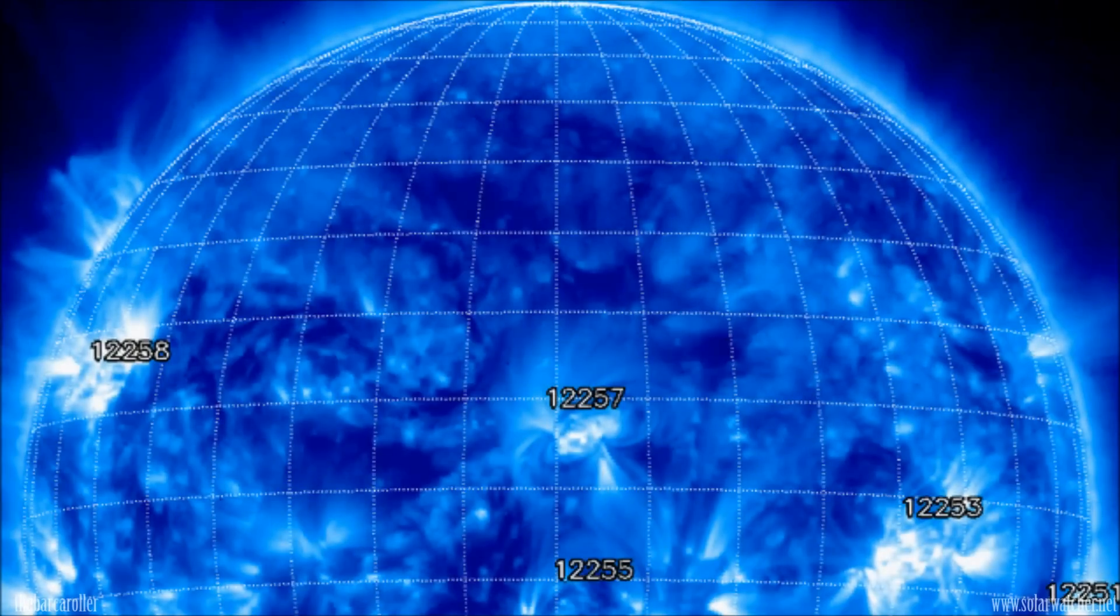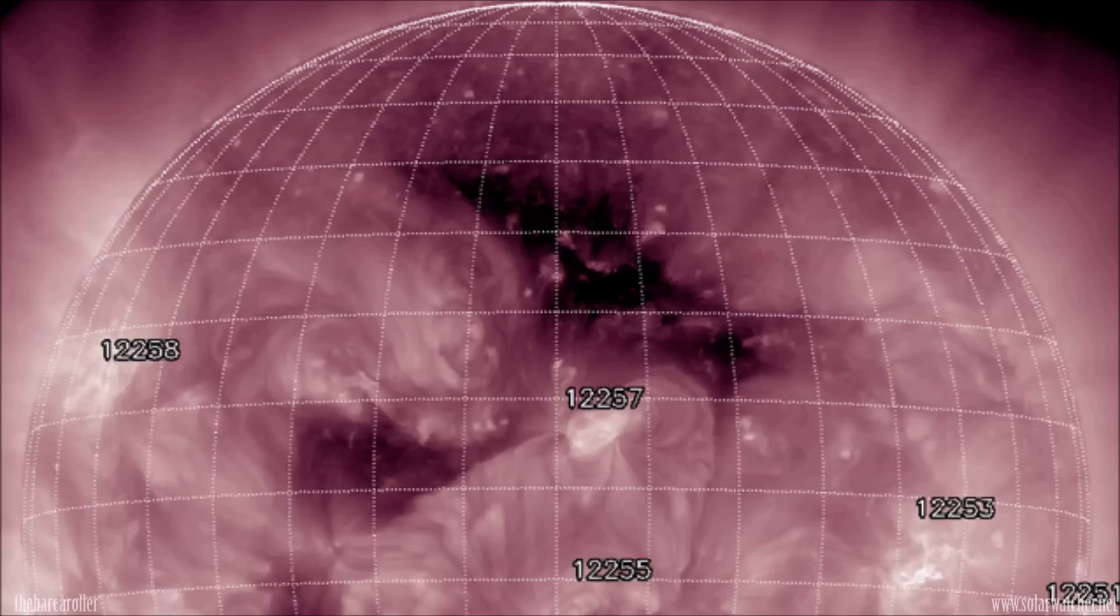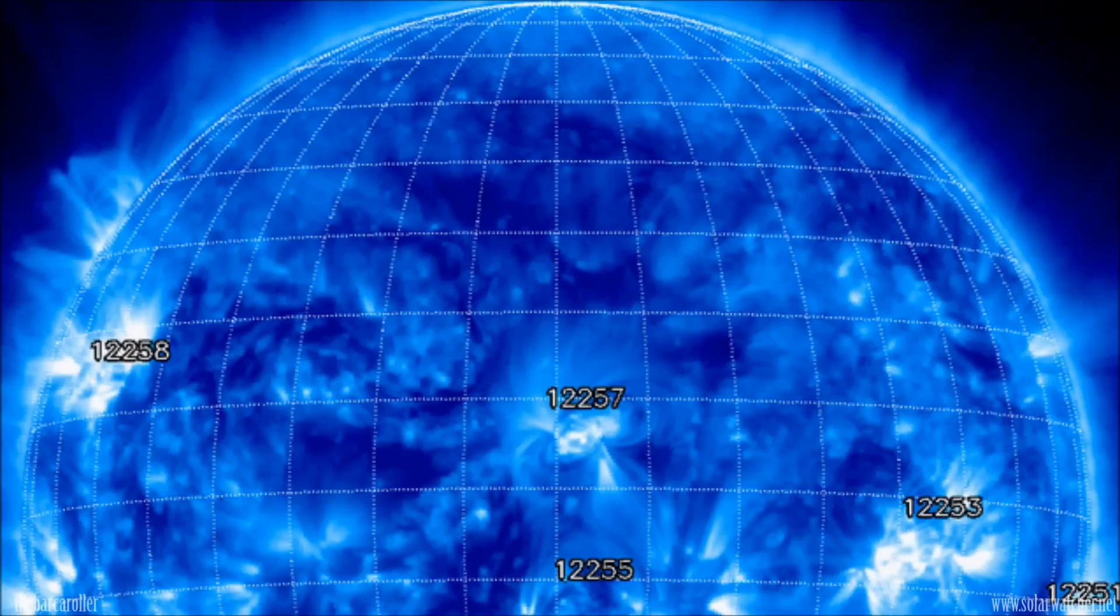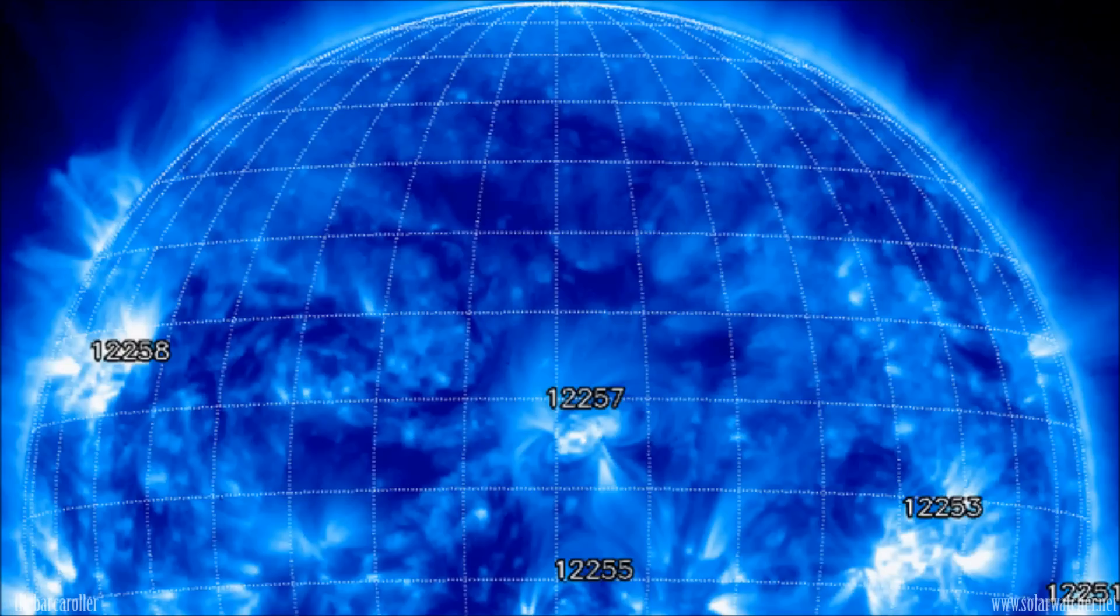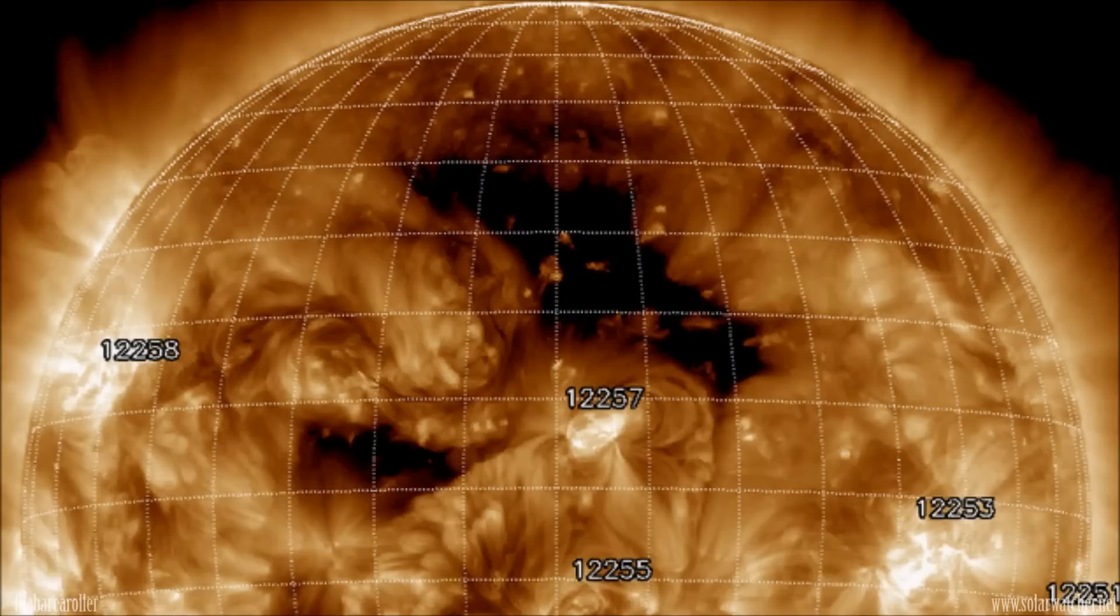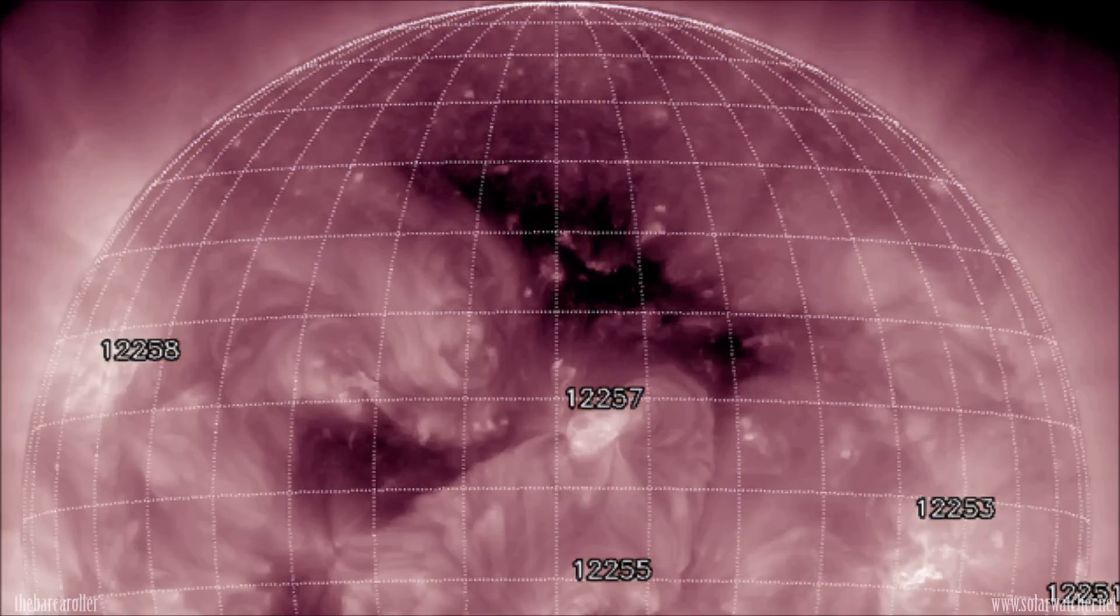This large dynamic coronal hole formation is currently in an earth-facing position. Now over the next few days we should see a high-speed solar wind stream exiting this coronal hole formation buffet the earth's magnetic field. Due to the proximity of this coronal hole formation on the solar corona, we should see a slight rise in solar wind speeds from January 10 through January 11.